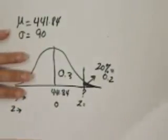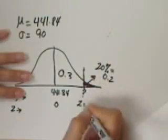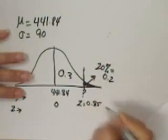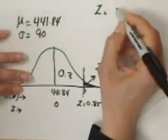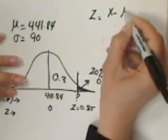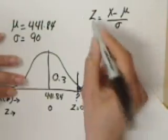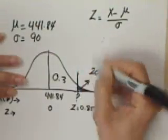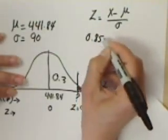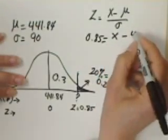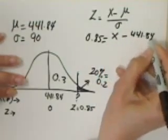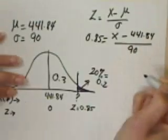So we come back here and I'm going to use that number. I'm going to say this z is 0.85. Now I know for my z distribution, my formula always is z equals x minus mu over sigma. So I'm going to plug in here what I know. I know z is 0.85, I know my x is my unknown, I know my mu is 441.84, and I know my sigma is 90.